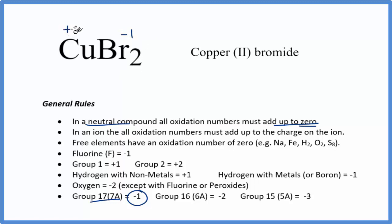Copper has to be plus 2 for all of this to add up to zero. So the oxidation number on copper here in CuBr2 is plus 2.